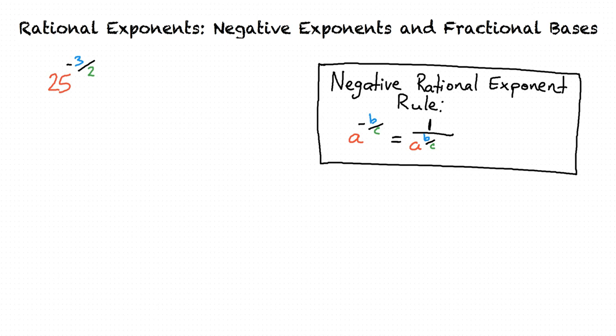When we see a negative exponent, what is the first thing we want to do? I think we should use the negative exponent rule to rewrite this as 1 over 25 to the 3 halves power.